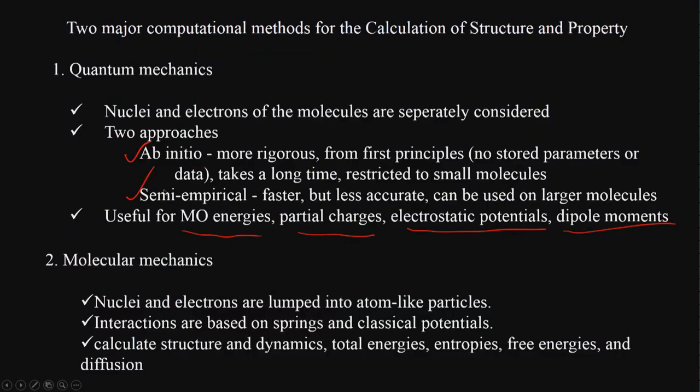The other method is called molecular mechanics. This is a simpler version of quantum mechanics where you do not differentiate between the nucleus and electrons — they are lumped together as atom-like particles, like balls connected by springs. Classical potentials like Hooke's law are used for calculating energy. We can calculate structure, dynamics, total energy, entropy, free energy, and diffusion — up to thousands of atoms and molecules.